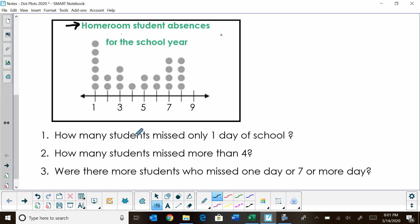How many students missed only one day of school? On the bottom these represent days. So we're going to look at one day. How many students? We have one, two, three, four, five, six dots. So we have six students who have missed only one day of school.